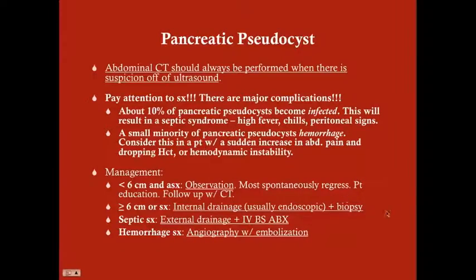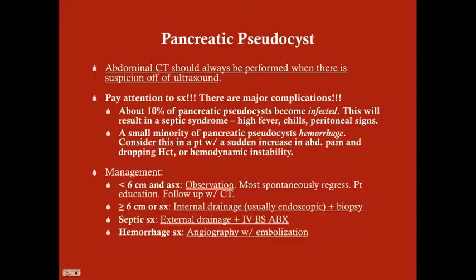If the pseudocyst is infected — presenting with septic syndrome including high fever (102–103°F), chills, elevated white count, and peritoneal signs — perform external drainage. For hemorrhage, characterized by sudden increase in abdominal pain, dropping hematocrit, or hemodynamic instability, treat with angiography with embolization. Internal drainage is for non-infected pseudocysts; septic symptoms require external drainage with antibiotics; hemorrhage requires angiography with embolization.